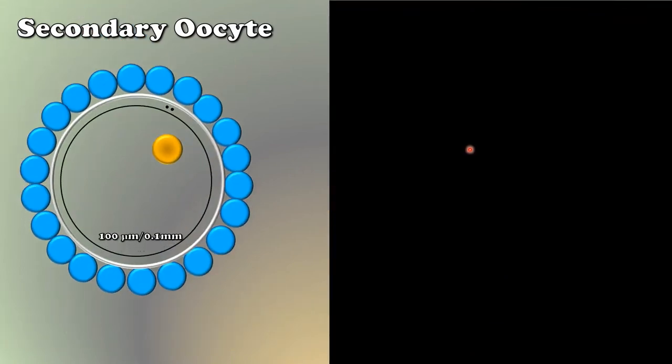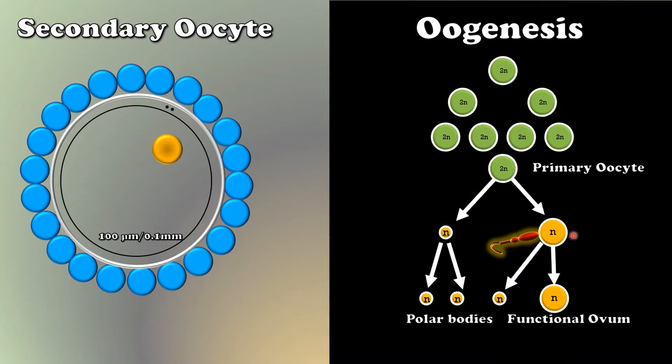As we all know that ovum is produced in the ovaries. Here, primary oocyte undergoes meiosis to form ovum. This entire process is called oogenesis. At the end of oogenesis, only one functional ovum is produced as compared to four sperms in males.